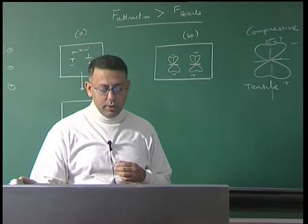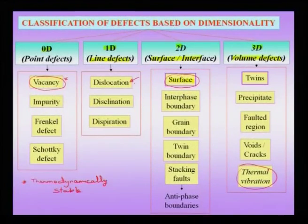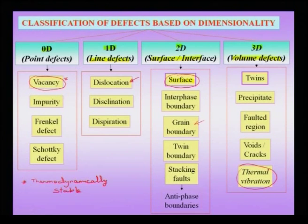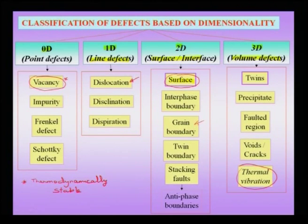Unlike many other defects — like dislocations and grain boundaries — which are thermodynamically metastable, the vacancy is thermodynamically stable. The implication: an unstable defect would spontaneously leave the crystal; a stable defect cannot be eliminated by heating. Just because I have a vacancy, I cannot heat the system to get rid of vacancies, because there is always an equilibrium concentration of vacancies that will remain in the substance.